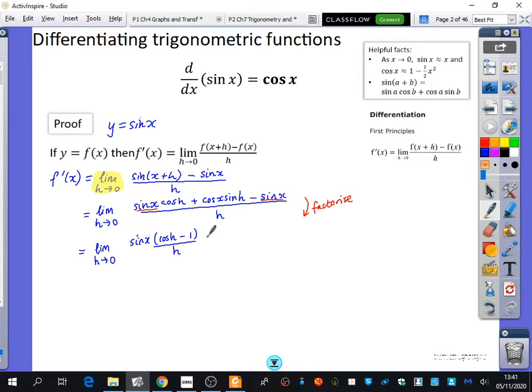That's all being divided by h. I haven't finished yet. I've dealt with these red bits and separated them into two separate fractions. I could have done it as one whole line fraction, but I'm going to separate it. Then I've also got plus cos x sine h all over h. I want this to be seen as two separate ones.